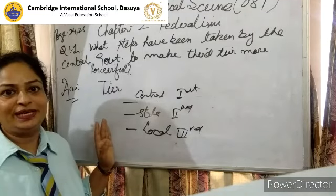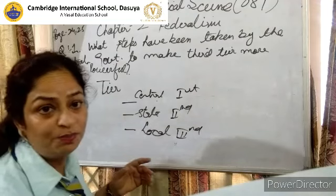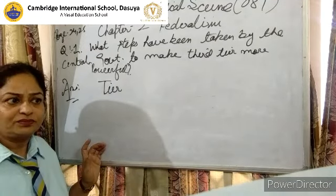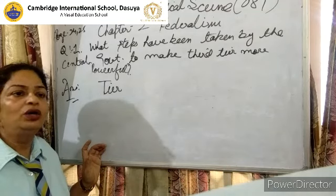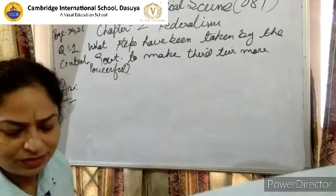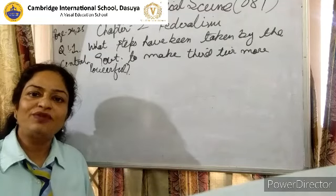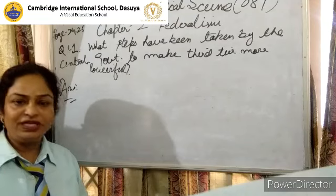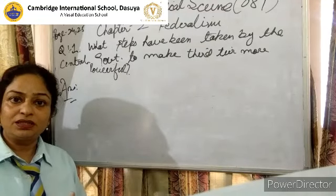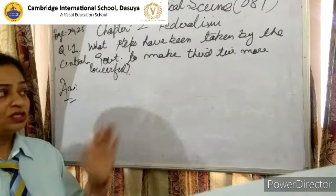The third level — local level — is where we choose our representatives directly, like our MLAs, MCs, Sarpanch, and other senior representatives. We prefer local level government because problems are better understood locally. Let us recap the topic of decentralization from our last video, since it is interlinked with this one. Advantages of decentralization include: local people have better knowledge, less burden on the government, women empowerment, people's participation, and it is the basic condition of democracy.